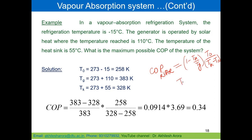T_k equals T_c equals T_a, whereas T_naught is the evaporator temperature. In this question, the refrigeration temperature is minus 15°C, so this is T_naught. The generator is operated by solar heat at 110°C, which is T_g. The heat sink temperature is 55°C, which is T_a equal to T_c.